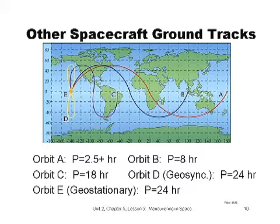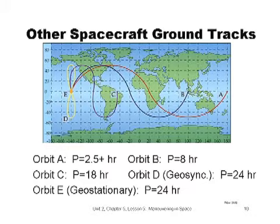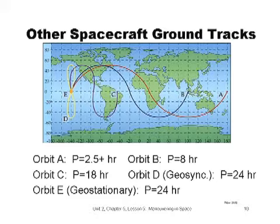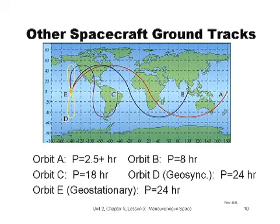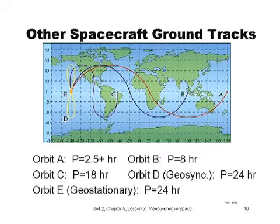Over half of the 550 operational spacecraft in orbit are in these 24-hour period orbits. These are very useful orbits that have their spacecraft orbiting Earth at the same rate that Earth rotates. Orbit D is a geosynchronous orbit, meaning it is in sync with the Earth. It has a 24-hour period and an inclination different than zero. Orbit E is a very special geostationary orbit, also with a 24-hour period, but with zero inclination. It is in an equatorial orbit and its great circle is in the same plane as the equator of the Earth. It appears as a dot on the equator.